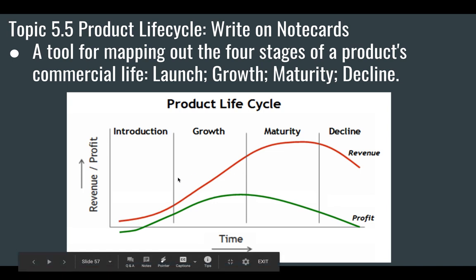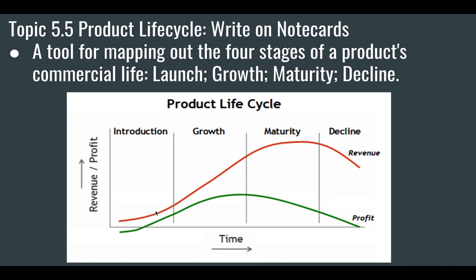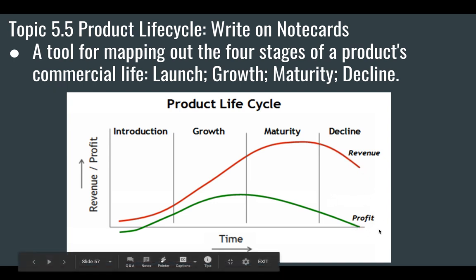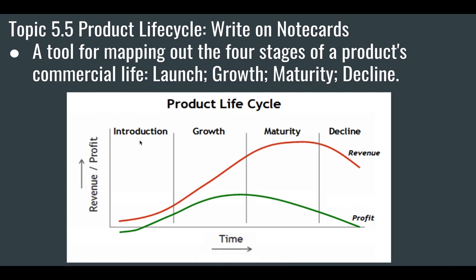You can follow this graph, which shows revenue and profit over time. As something is new to the market, it's going to have lower revenue, but over time it's going to grow — revenue grows, profits grow. When it reaches maturity, revenue and profits start to drop off, then decline — they fall to their lowest point. This is the product life cycle, and we'll go through these stages right now.